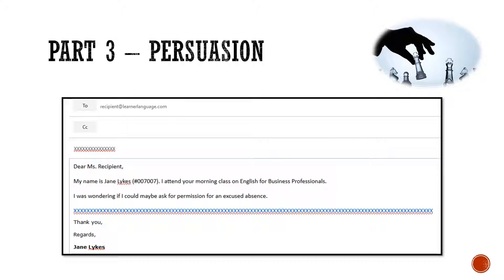If you remember, in our last part we made our polite request: 'I was wondering if I could maybe ask for permission for an excused absence.' And we said there was something missing. This is what we're going to call request support — something that will support our request.